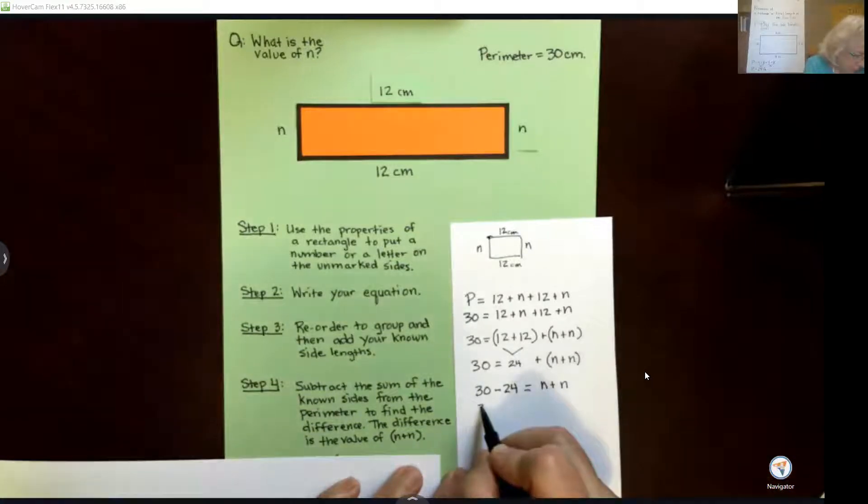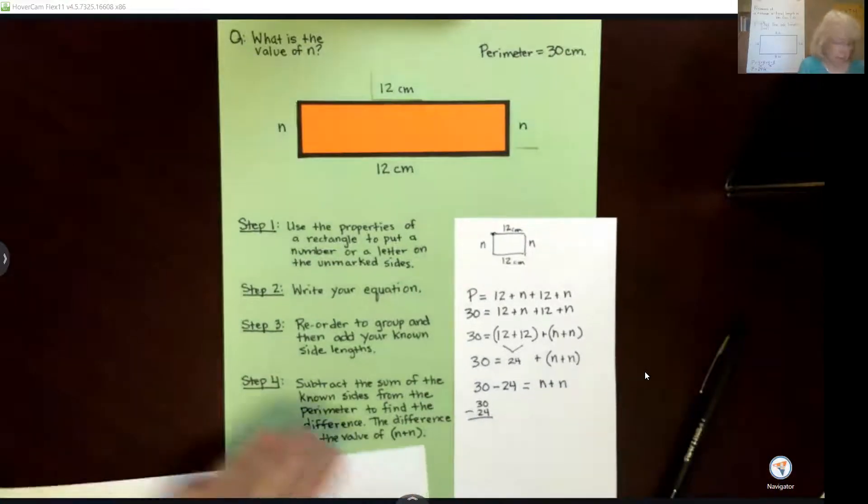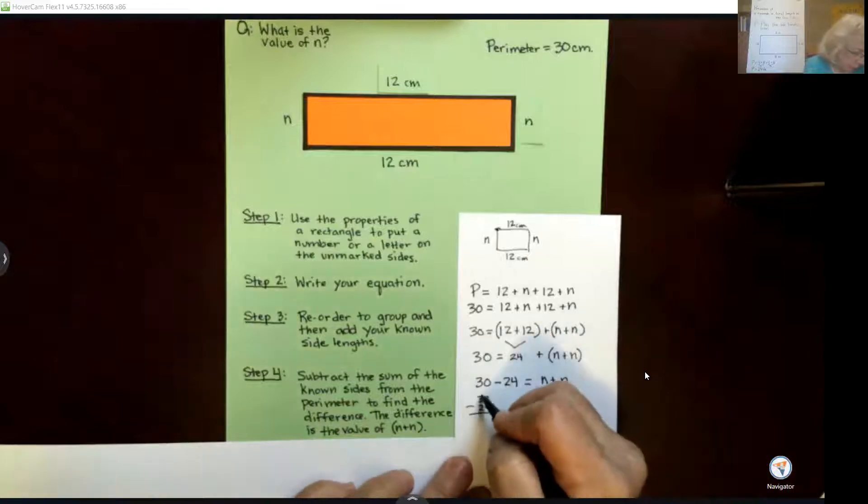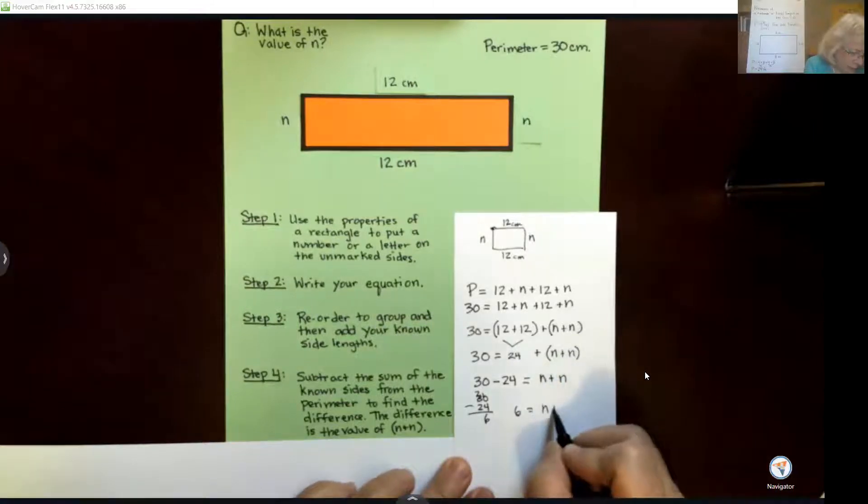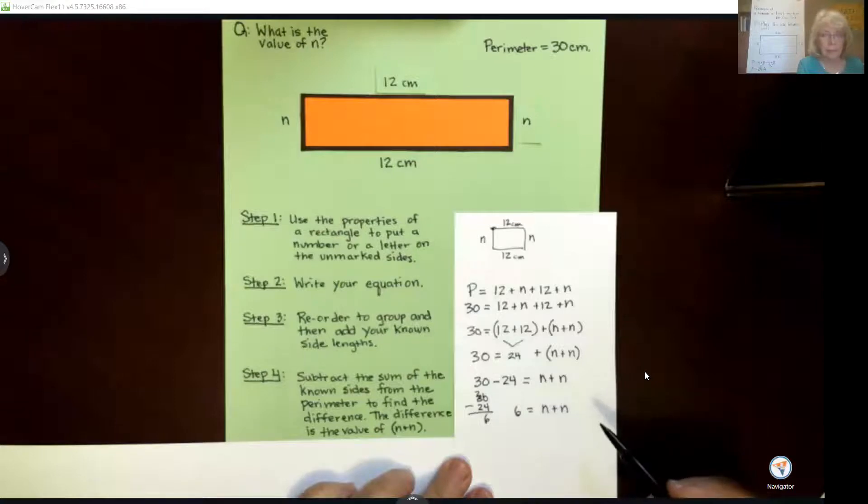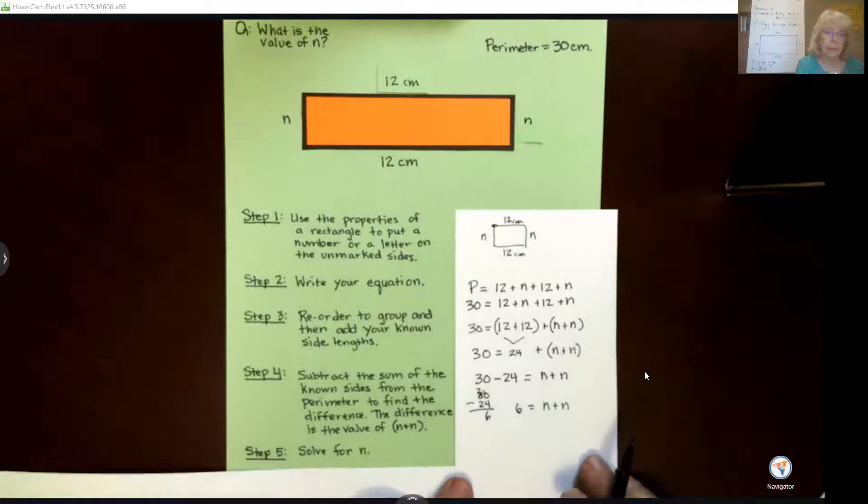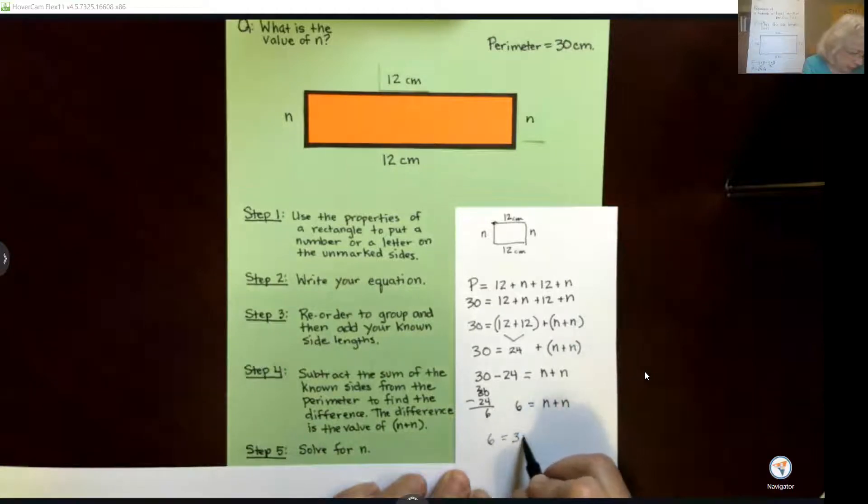Okay, so let's do 30 minus 24. We could count on 24 and count up to 30, or we could do our regrouping problem here and we'll get 6. So we have 6 is equal to n plus n. Now remember, n has to be the same number, so we have to think about what two numbers do we know that add together to make 6. We could also think about dividing 6 by 2 if you're comfortable with that.